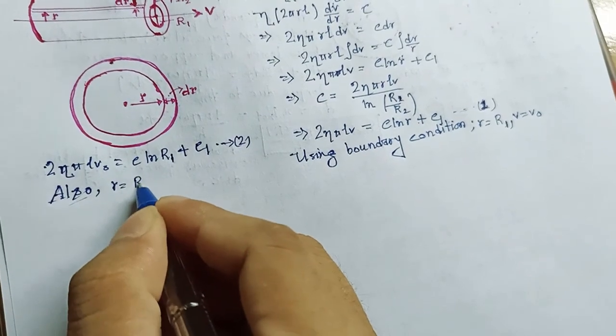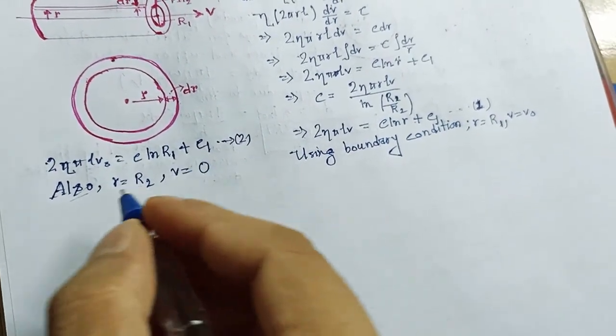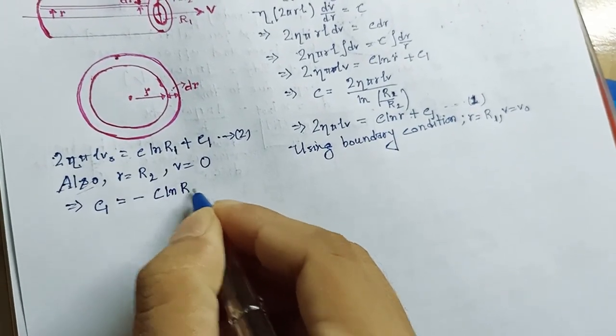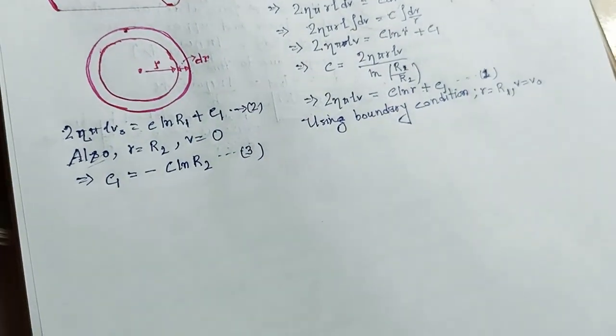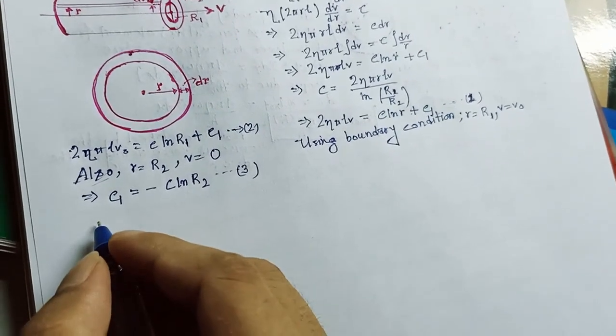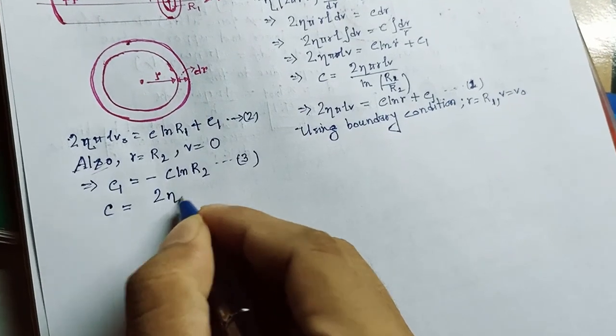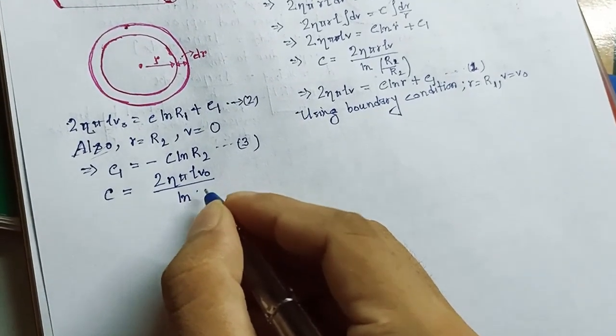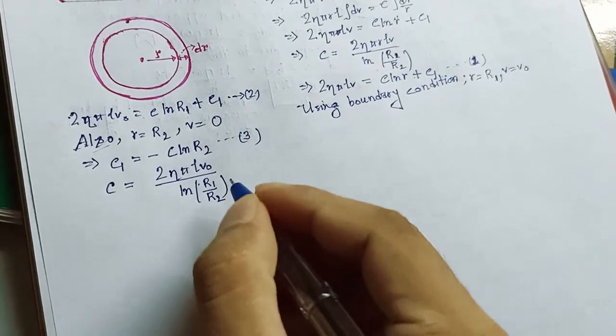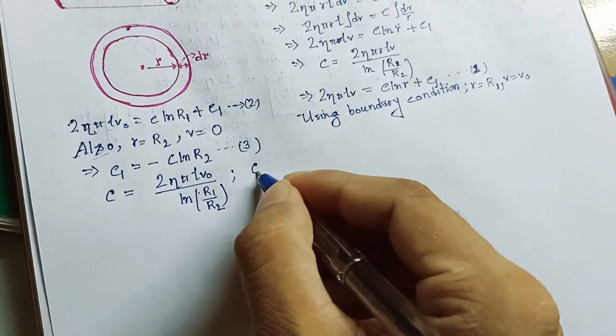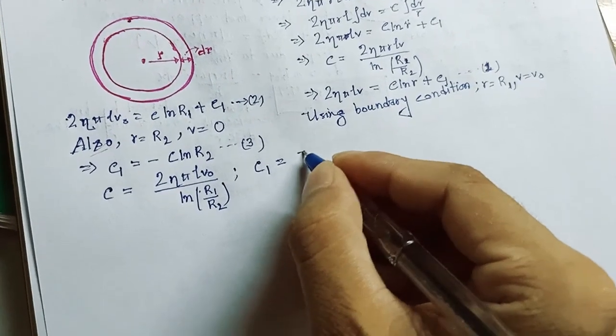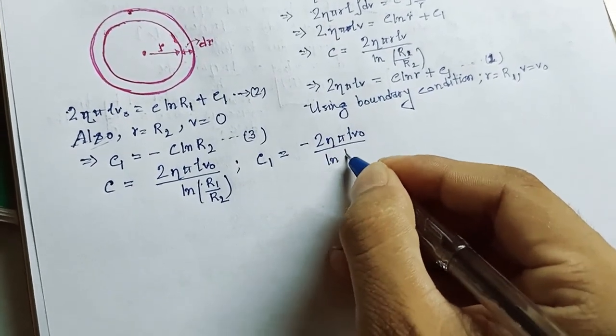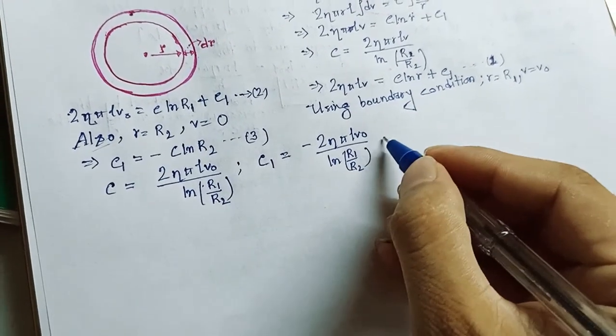When r equals r2, then v equals 0. So our value of C1 will become minus C ln r2. Let this be our equation number 3. This gives us 2 eta pi l v0 divided by ln r1 divided by r2, and C1 equals minus 2 eta pi l v0 divided by ln r1 divided by r2 into ln r2.